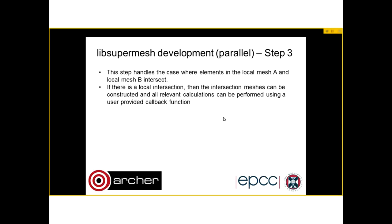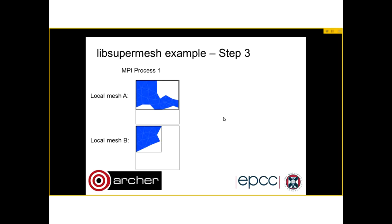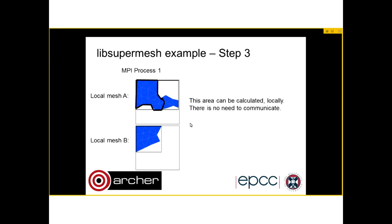Once the data are in transit from one MPI process to another, we can check if we have both parts of the local meshes and can compute part of the local supermesh. In this case, MPI process 1 has a part from the local mesh, and we are in luck because this part of local Mesh A can be supermeshed with local Mesh B. For the rest, we have to wait for communication with the other MPI processes.